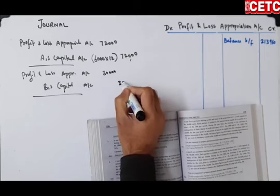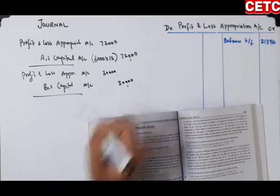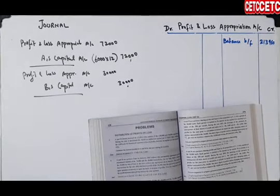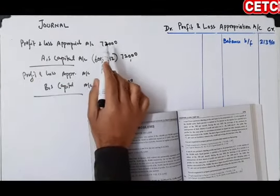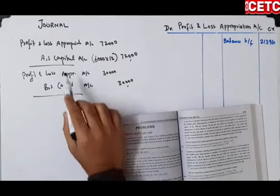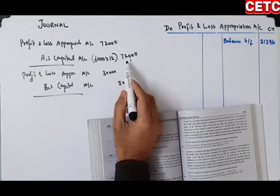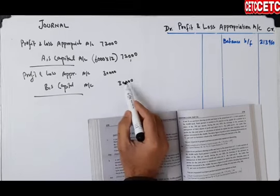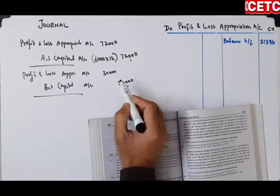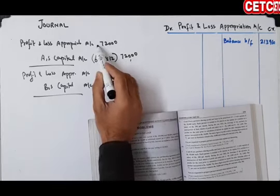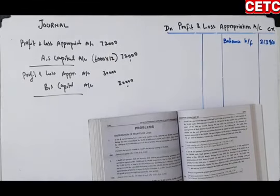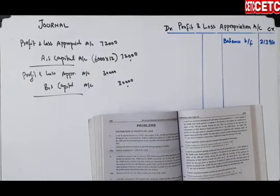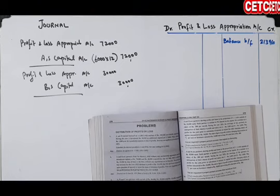Ab iski ekthi entry bhi ho sakti hai — compound entry bhi pass kar sakte hain. Likh sakte hain: Profit and Loss Appropriation Account debit — A's Capital 72,000, B's Capital 30,000. In dono ko jama karke ekthi debit kar dein ek amount se.